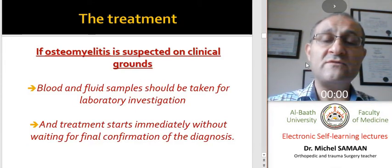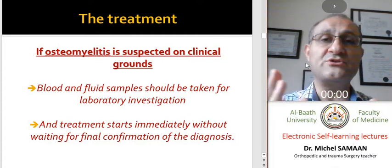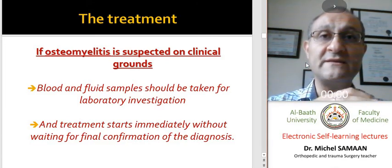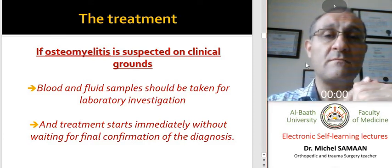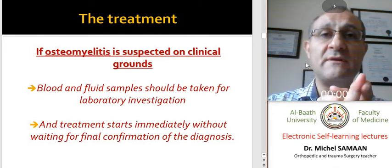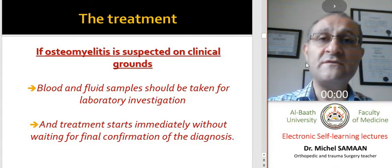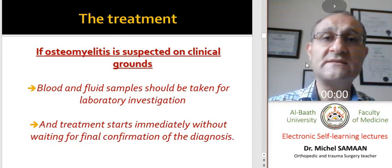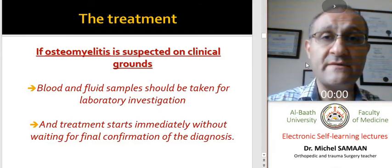Regarding treatment guidelines for acute osteomyelitis: if we suspect acute hematogenous osteomyelitis, we first take samples by aspiration or blood samples, send them to the laboratory, perform blood tests to investigate the infectious status, and begin treatment immediately. If we have pus in the aspirate, we should go directly to the operating room.